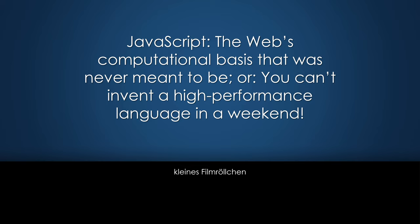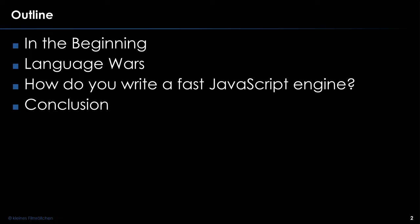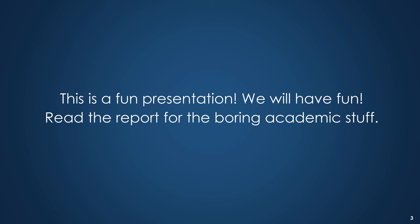The title of the report is: 'JavaScript: The Web's Computational Basis That Was Never Meant To Be, or You Can't Invent a High Performance Programming Language in a Weekend.' Here's the outline — I was focusing on three main questions: Why is JavaScript popular despite being so slow? Why is JavaScript popular in general? And why did JavaScript win against all the other early languages?